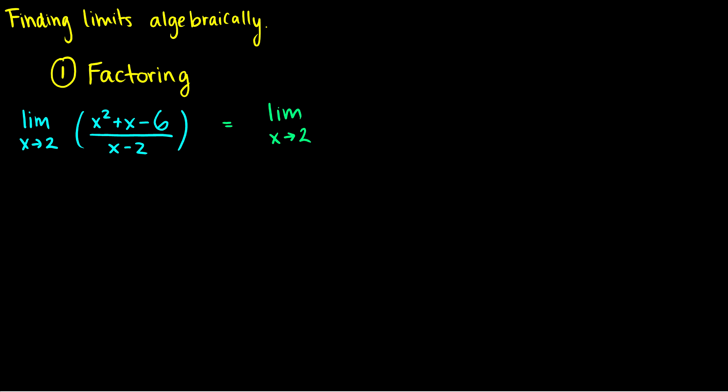So x squared plus x minus 6 — how do we factor this? We need the last two numbers to multiply to negative 6, and when we add them together they have to add up to 1 to get the positive x. So if we factor this, it will be x plus 3 and x minus 2. We can multiply these out to check: x squared plus 3x minus 2x minus 6, which simplifies to x squared plus x minus 6.